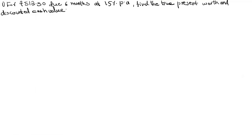Good morning students. In this session, I will solve some problems related to bill discounting. See the first question: for rupees 512.55, due 6 months at 15% per annum, find the true present worth and discounted cash value. That means you need to calculate the present value of the bill as well as the discounted cash value.